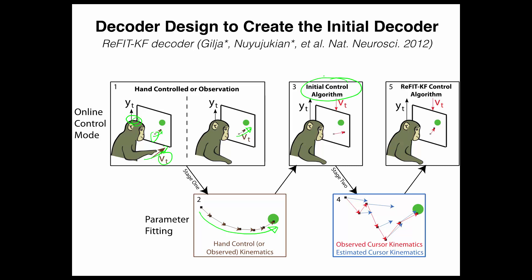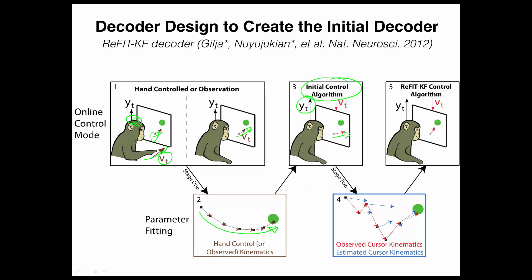Now because this is the first time that the animal's neural activity, Y of T, is directly controlling the cursor via that closed-loop feedback, we might want to make further adjustments. For example, maybe he always wishes to move his cursor directly towards the target, as shown in panel four here. If the initial algorithm actually takes you slightly off track, we can make the assumption that he always wants to move towards the target and retrain the algorithm so as to arrive at the final refit Kalman filter control algorithm. This is what will be referred to as the initial decoding algorithm, or decoder adaptation.